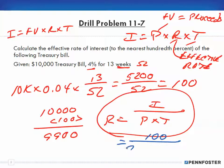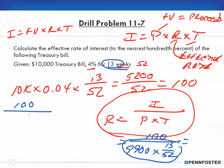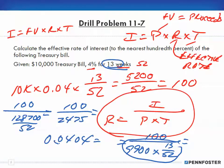Our formula gives us rate equals interest over proceeds times time. Our interest is $100, our proceeds are $9,900, and our time is 13 weeks over 52. Working the denominator first: $9,900 times 13 gives us $128,700, divided by 52 gives us $2,475. Then $100 divided by $2,475 gives us 0.0404.